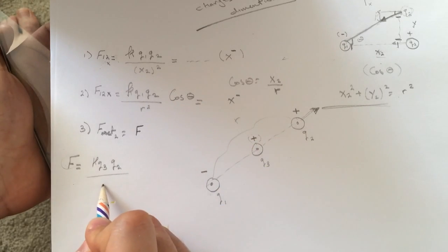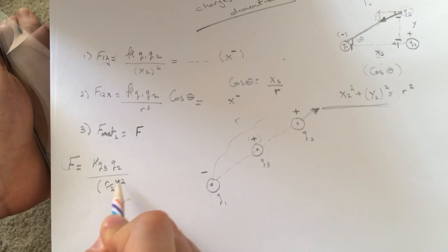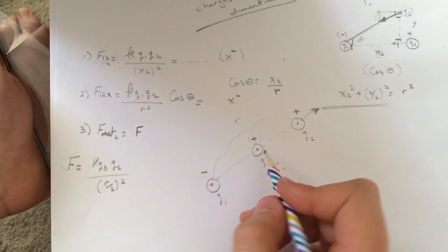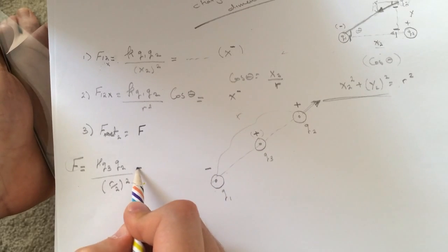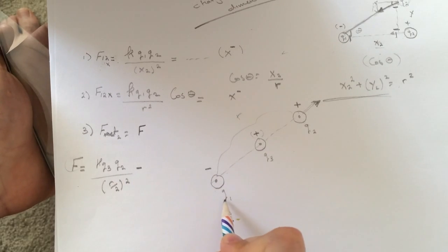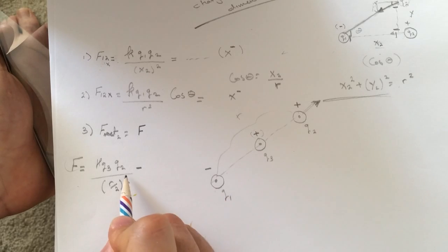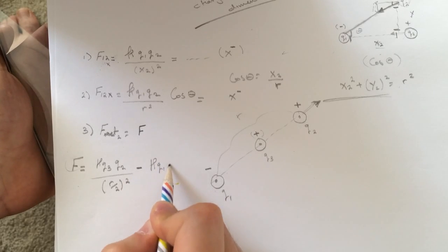And then square this guy. And since this is going in the opposite direction it's gonna be negative K Q1 Q2 divided by R squared.